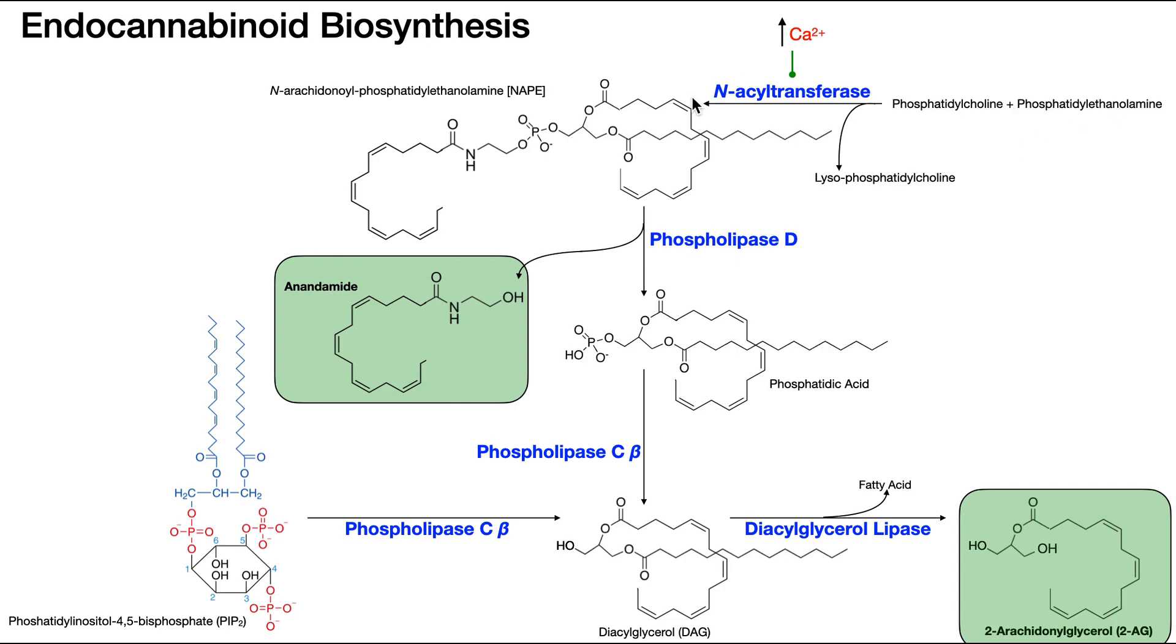What I want to emphasize here before we go to the next slide and look at the mechanism is remember this committed step in endocannabinoid synthesis. This is N-acyltransferase. Once you catalyze this reaction and form N-arachidonoyl phosphatidylethanolamine, or NAPE, this molecule doesn't really do anything else. So it's committed to forming these two endocannabinoids. If you want to turn on that synthesis, just turn on this enzyme.